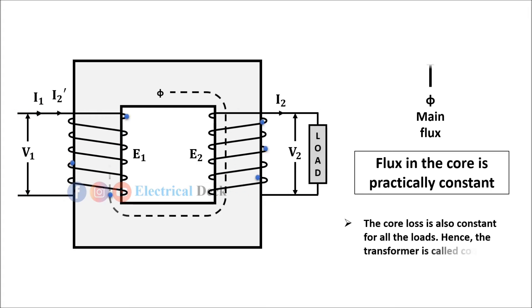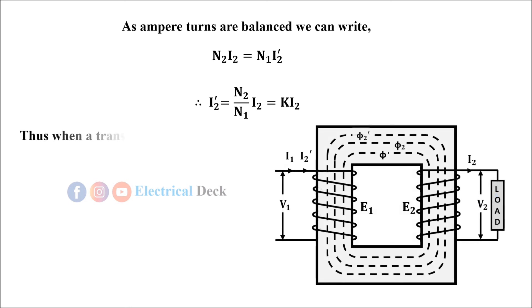As ampere turns are balanced, we can write N₂I₂ equals N₁I₂', therefore I₂' equals KI₂ where K is transformation ratio of transformer.